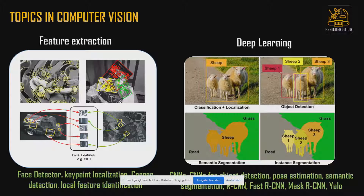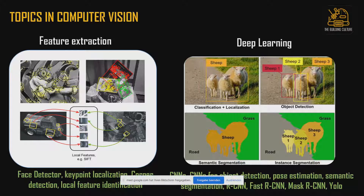Deep learning also assists in computer vision, and nowadays this is what most people talk about. We see classification and localization of objects inside an image, detection of multiple objects, and semantic segmentation — where we have a general segmentation of different types of objects rather than separating individual instances. Instance segmentation is also covered. These more complicated tasks are where convolutional neural networks come into play, including pose estimation and semantic segmentation.